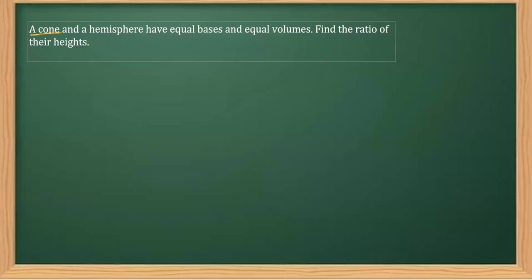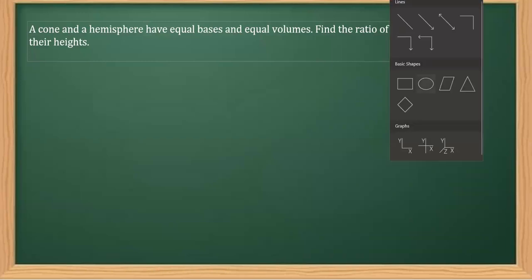In the next question, it says a cone and a hemisphere have equal bases and equal volumes. So we need to make one cone and one hemisphere.